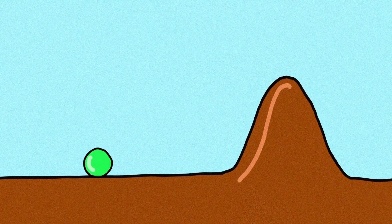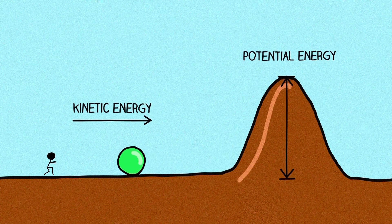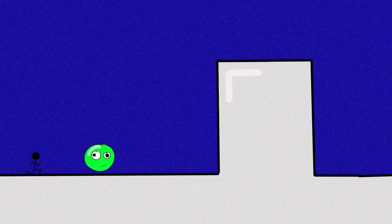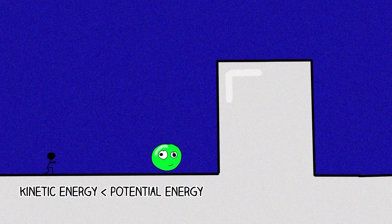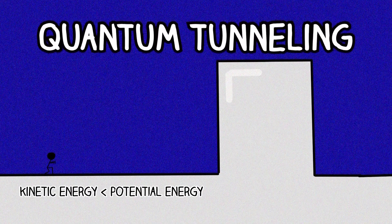Well the short version is: in regular classical physics, if you have a ball at the bottom of a hill, if it doesn't get a big enough push to get over the hill, it's kind of just stuck there. Putting this into physics talk, if the ball doesn't have enough kinetic energy to get over the potential energy of the hill, it'll never get over — like ever. But of course in quantum mechanics, things aren't so simple. If we replace the ball with a quantum particle like an electron, and the hill with some kind of potential barrier, even if the electron doesn't have enough kinetic energy to jump the potential barrier, sometimes it can end up on the other side. This is called quantum tunneling, and in this video we're going to see how it works.